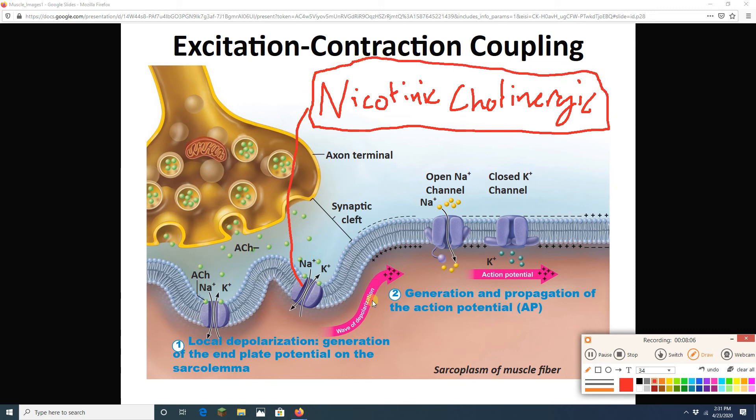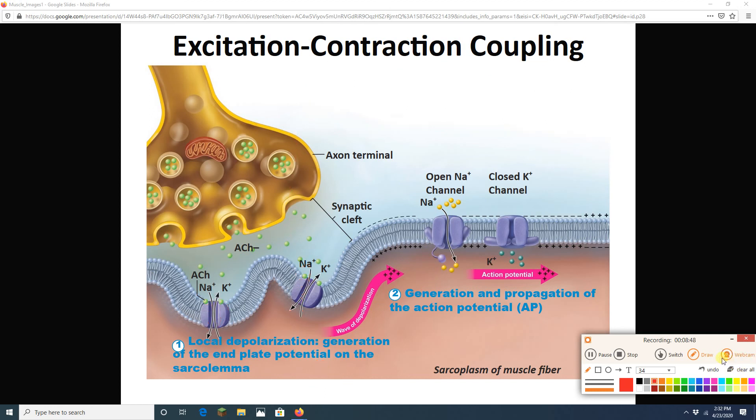When the acetylcholine binds to them, these receptors each is an ion channel. And sodium is going to rush in, which means we are going to get a graded potential right here. The graded potential moves to nearby voltage-gated sodium and voltage-gated potassium channels. And we generate an action potential that travels along the entire muscle cell's membrane, the entire muscle cell's sarcolemma.